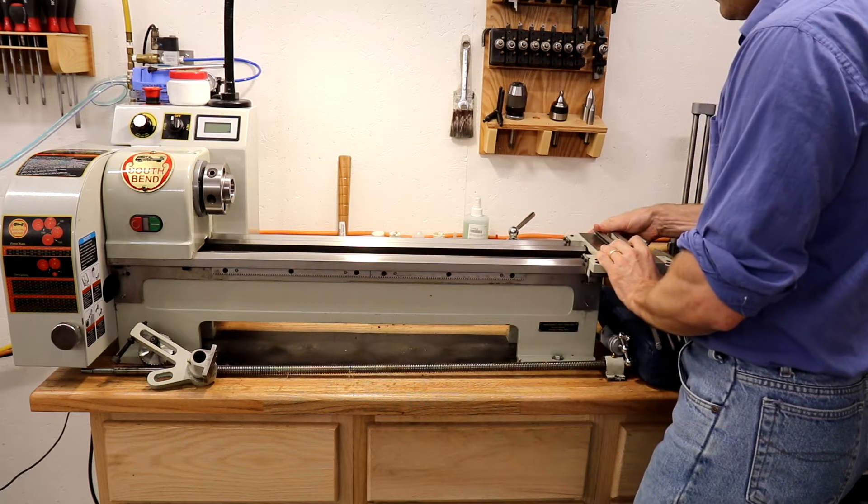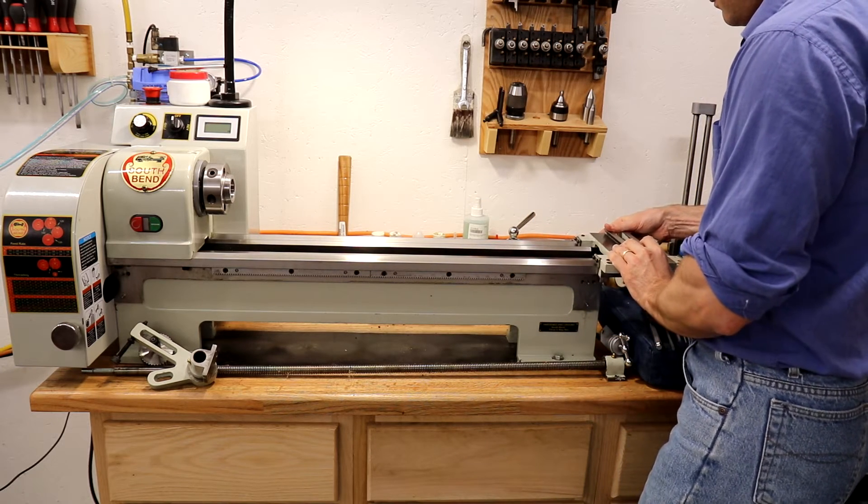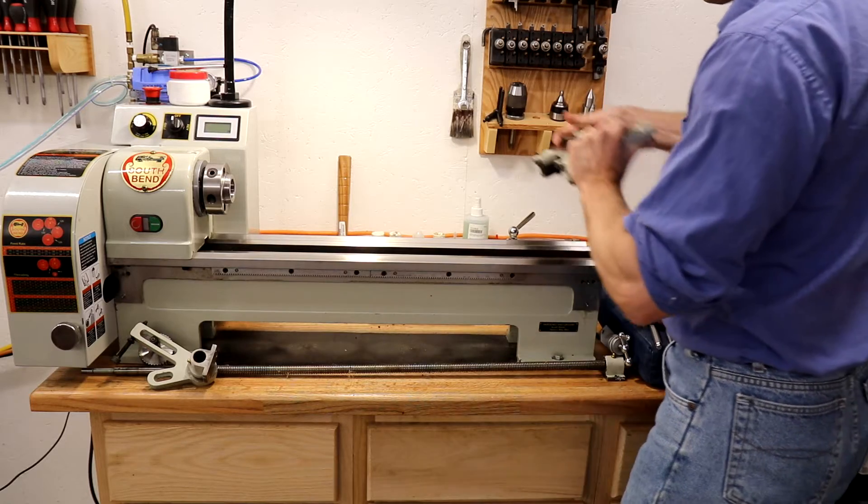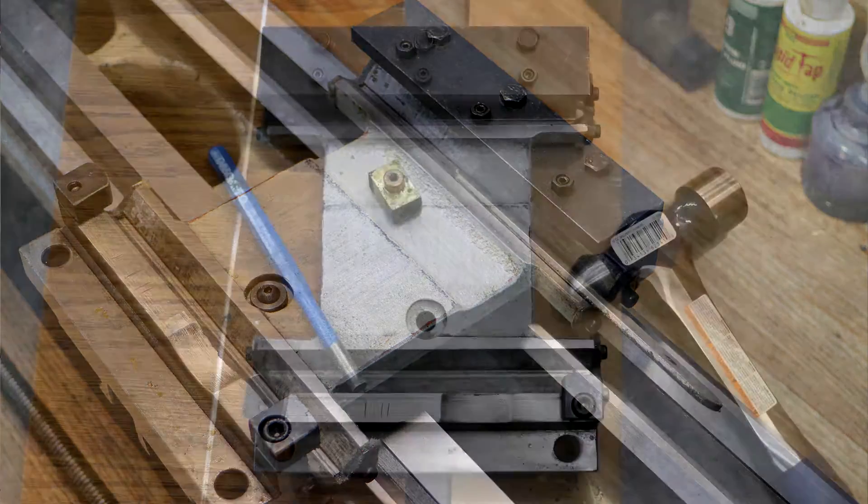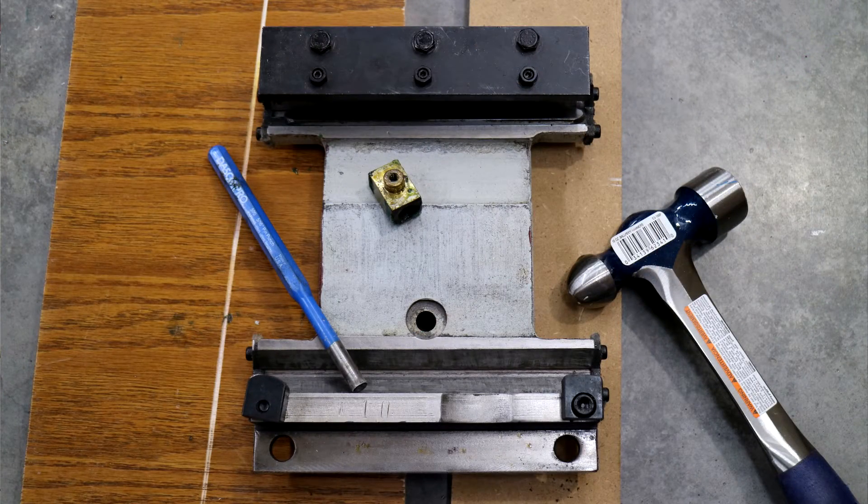As the saddle is removed from the bed, it's likely that the saddle gib will fall. You just have to be sure it goes back in the right spot. Here you can see that saddle gib and that the acme nut is held in place with a screw. Just need to take the screw out and punch the acme nut out.